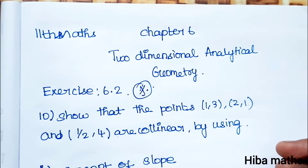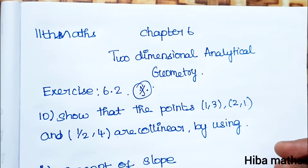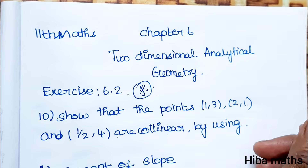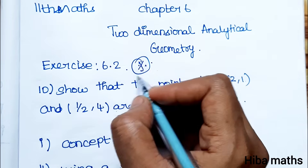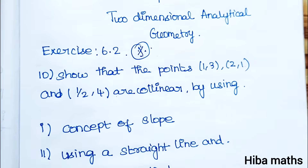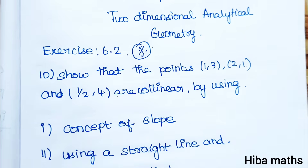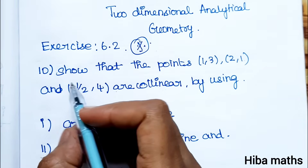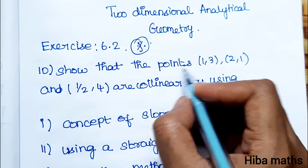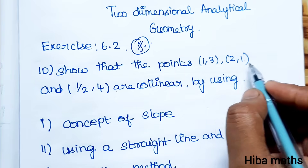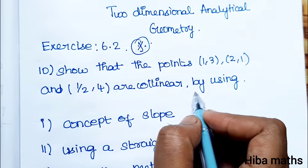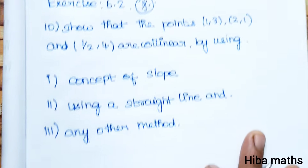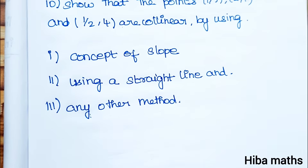Hello students, welcome to Hiba Max 11, Standard Max Chapter 6, 2 Dimensional Analytical Geometry, XI 6.2. We are going to solve the 10th question. This is an important question. Show that the points (1,3), (2,1) and (1/2, 4) are collinear, using 3 methods.